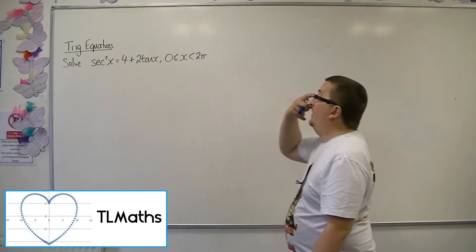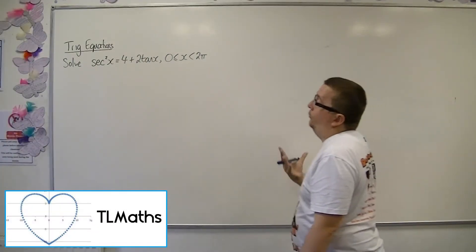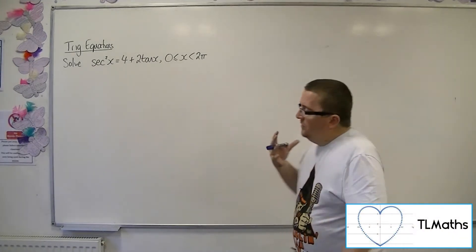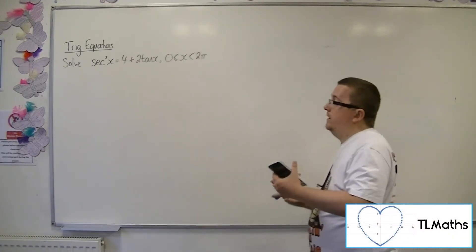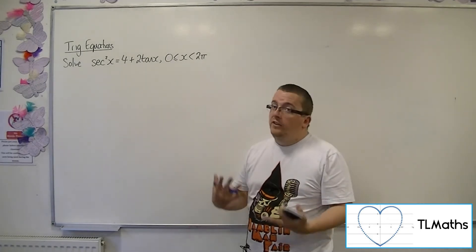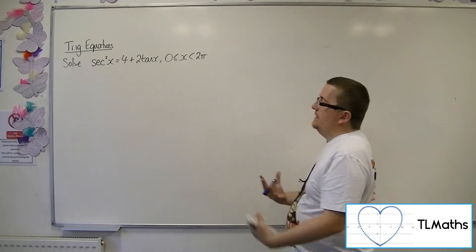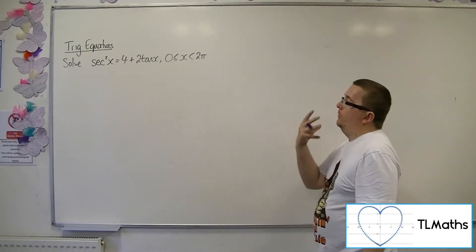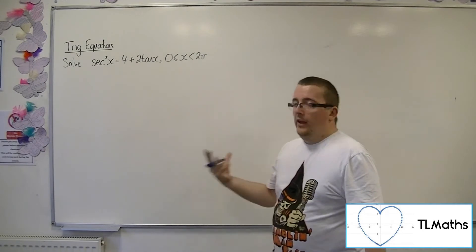OK, so let's say I want to solve sec squared x equals 4 plus 2 tan x between 0 and 2 pi. This looks suspiciously like a quadratic waiting to be solved. The only problem is that I can't solve it as it stands because we have a quadratic that involves both sec x and tan x.